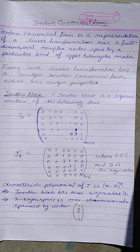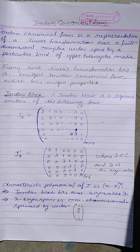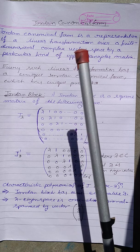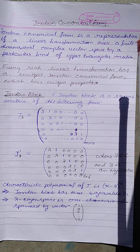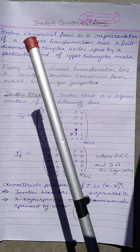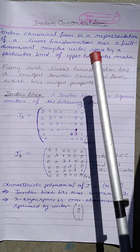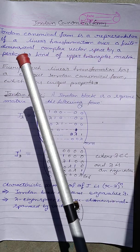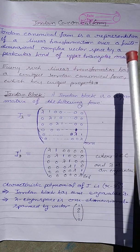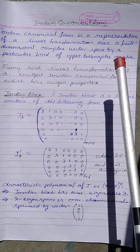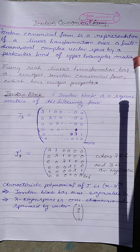Good morning students. The remaining part of the previous lecture is Jordan canonical form. The definition of Jordan canonical form is: it is a representation of a linear transformation over a finite dimensional complex vector space by a particular kind of upper triangular matrix.